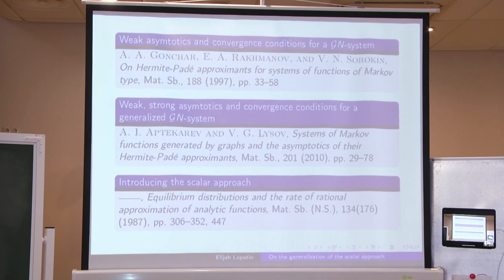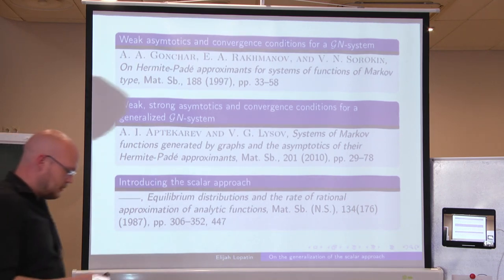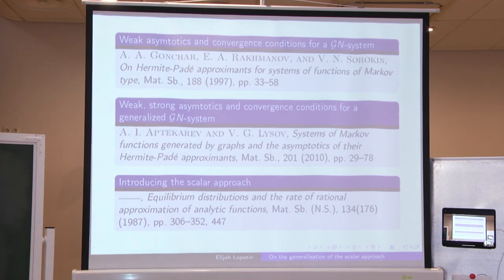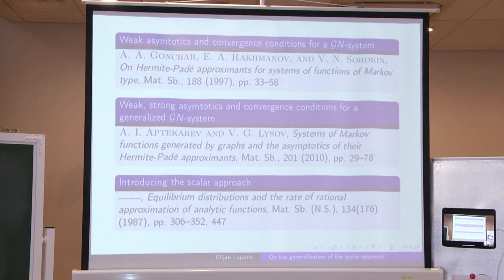All these works deal with the vector equilibrium problem for estimating the weak asymptotics of Hermite-Padé polynomials. In 1987, Gonchar and Rakhmanov proposed the scalar potential problem method, which works with a scalar potential with some external harmonic field. In this case, it was empirically established that the zeros of the corresponding Hermite-Padé polynomials are attracted to some contour defined as a member of a certain class of contours — now known as the Stahl compact.